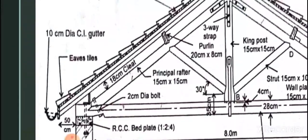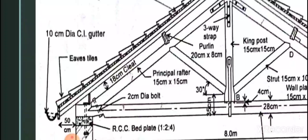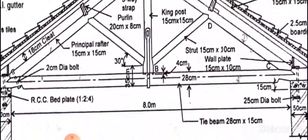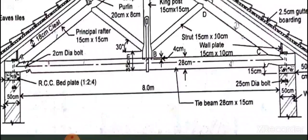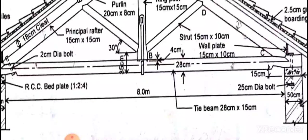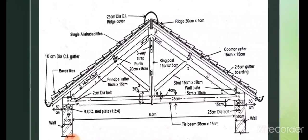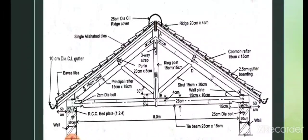The principal rafter dimension seen in the drawing is 15 cm and inside also 15 cm — it is a 2D drawing of a 3D object. The tie beam size is 28 cm by 15 cm; the dimension seen in the drawing is 28 cm and the inside thickness is 15 cm. After observing the sizes of each and every member, you will have to draw this figure.